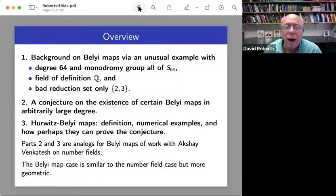And so in part two, I'm going to conjecture that similar Belyi maps exist in arbitrarily large degree. And what I did with Akshay a while back was more centered on number fields. And this Belyi map case is more geometric.